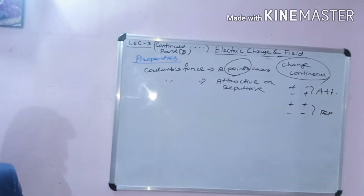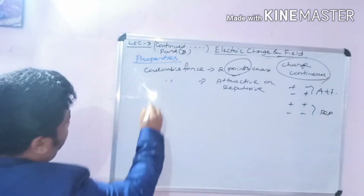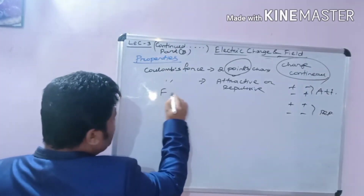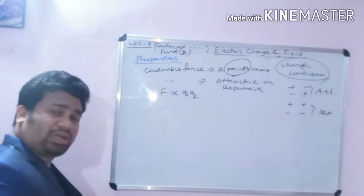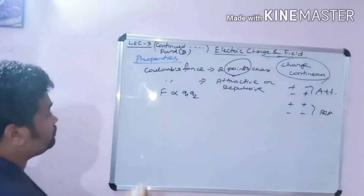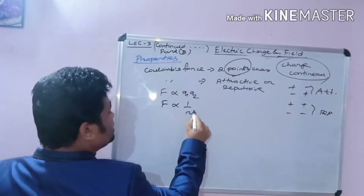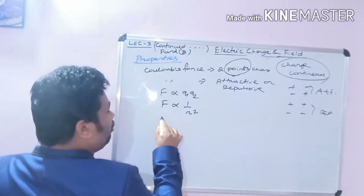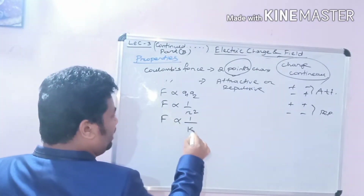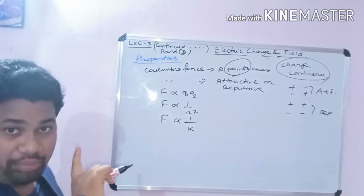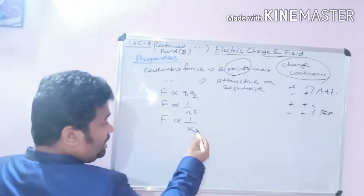Next property: Coulomb's force is directly proportional to the magnitude of the charges. And Coulomb's force is inversely proportional to the square of the distance between the charges. Also very importantly, Coulomb's force is inversely proportional to the dielectric constant of the medium.